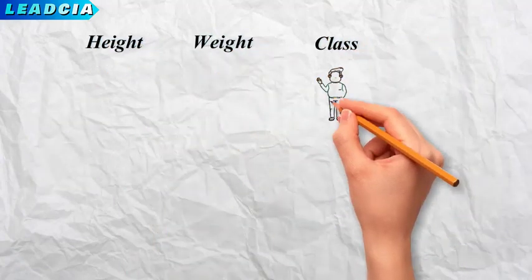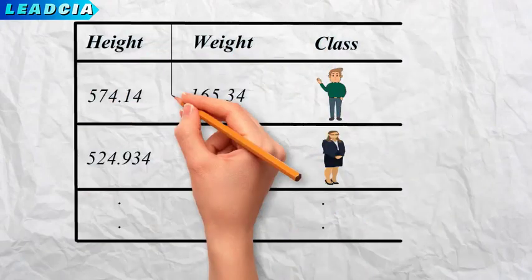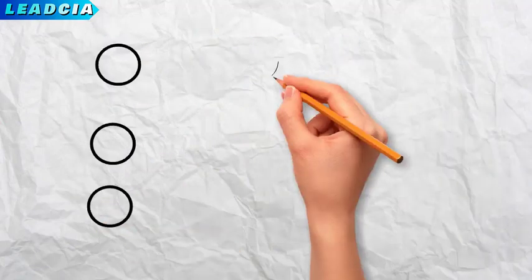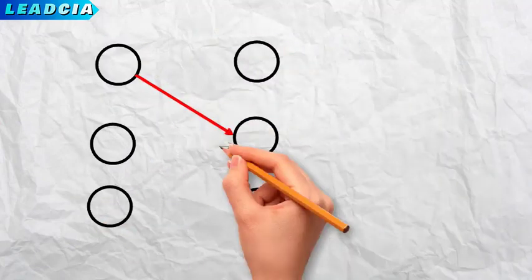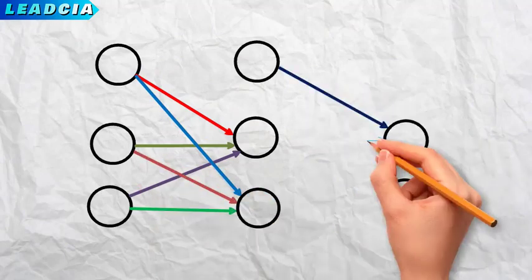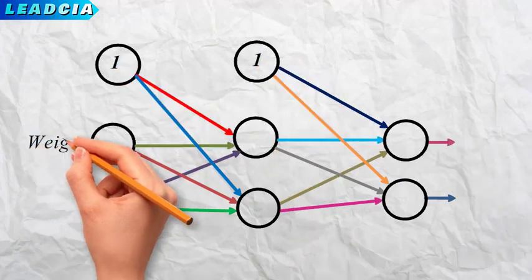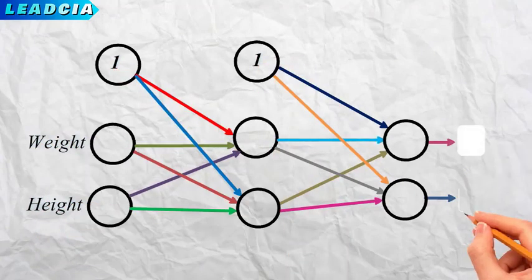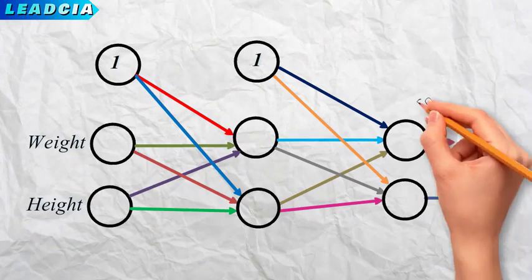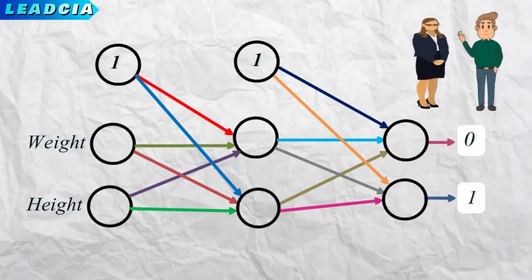First of all we must have a learning database that contains several examples of people's weights and heights with the indication of each person's gender. The neural network we are going to consider is made up of three layers: an input layer through which we introduce the height and weight, a hidden layer made up of two neurons plus a bias, and an output layer made up of two neurons. The first neuron will output one and the second a zero if the person is a woman, while if the person is a man they will output zero and one respectively.